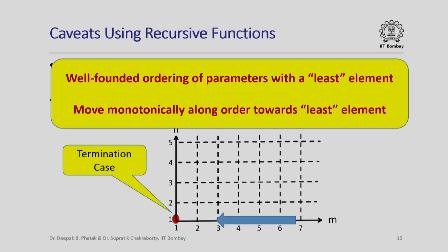In more mathematical terms, what we are really saying is that the values of the parameters must have a well-founded ordering among them. The values of the parameters must be ordered in a certain way, and in this ordering there must be a least element. Given any invocation of the recursive function with a certain valuation of parameters, the recursive calls must monotonically change the values of these parameters so that we move along this ordering towards the least element, and that least element — the fixed end of the ordering — should be the termination case.